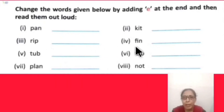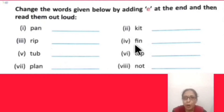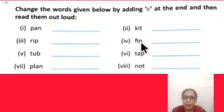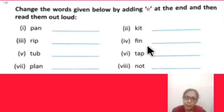Next word: F-I-N, 'fin' — a part of a fish's body. When E is added at the end, the word becomes 'fine' — meaning okay, good.